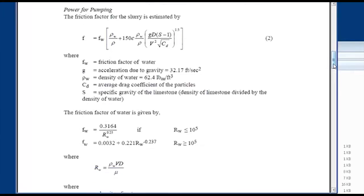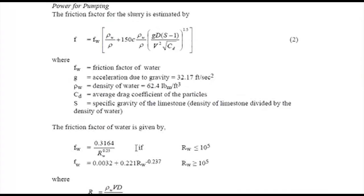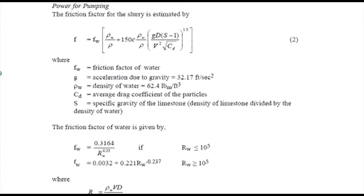Is that the cutoff for turbulent flow? I thought it was lower — maybe a couple thousand. Anyway, we'll just go with these correlations for friction factor. The first thing I like to do is try to get rid of any conditional if-statements in my optimization problems, because they can be very difficult for a solver to deal with.